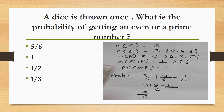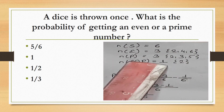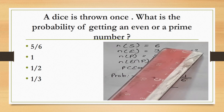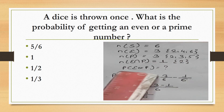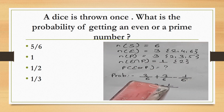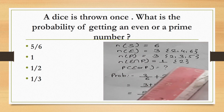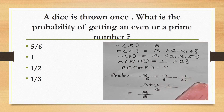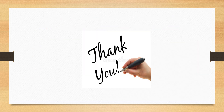A dice is thrown once. What is the probability of getting an even or a prime number? Total outcomes = 6. Even numbers: 2, 4, 6 — that's 3. Prime numbers: 2, 3, 5 — that's 3. The intersection (both even and prime) = {2}, so n(E∩P) = 1. Using the formula: P(E or P) = (3 + 3 − 1)/6 = 5/6.